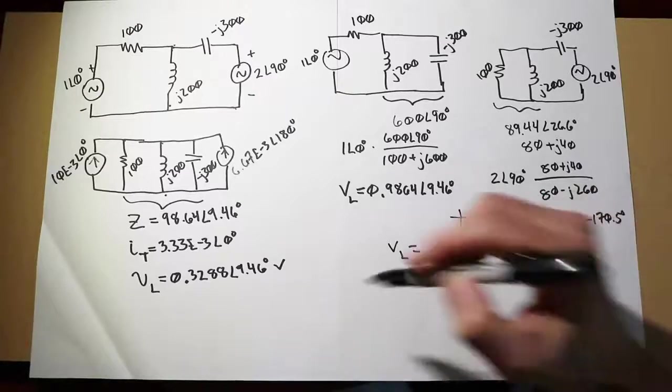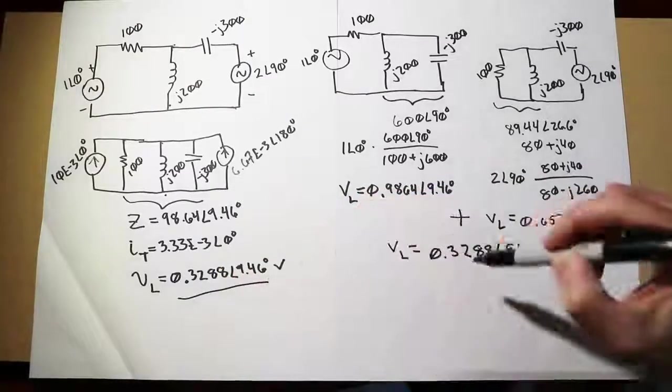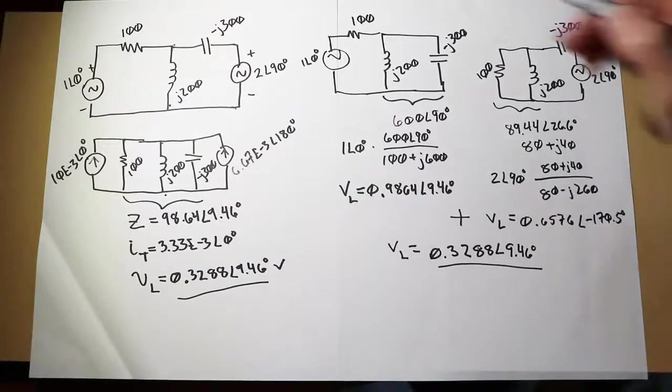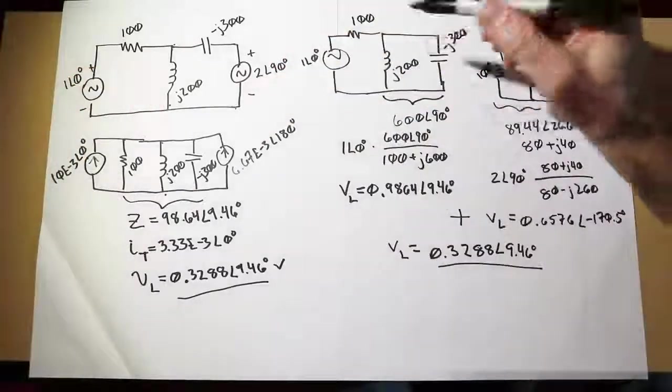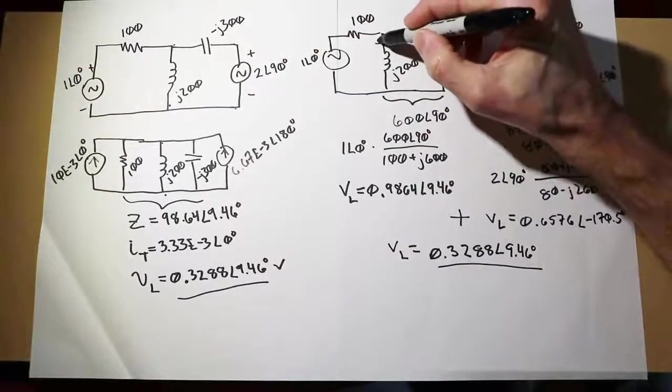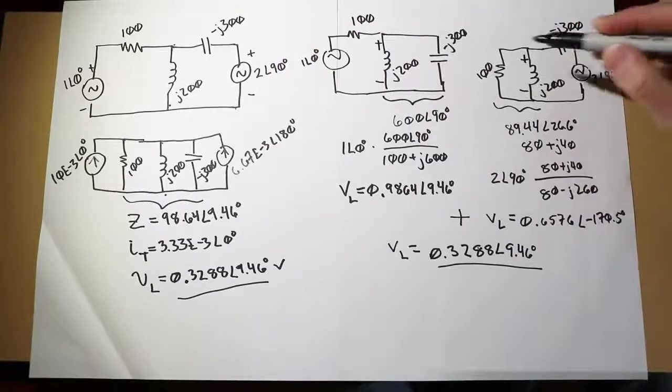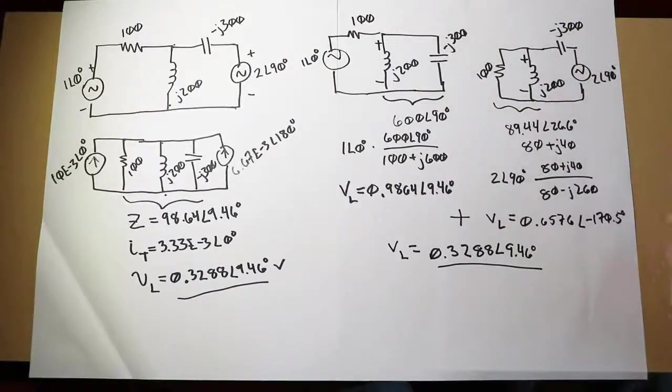And we see that these two values are identical. Beautiful. In this particular case, the two voltage sources happen to produce reference polarity on voltage across the inductor, plus to minus. We just straight add them up. Everything's very simple.